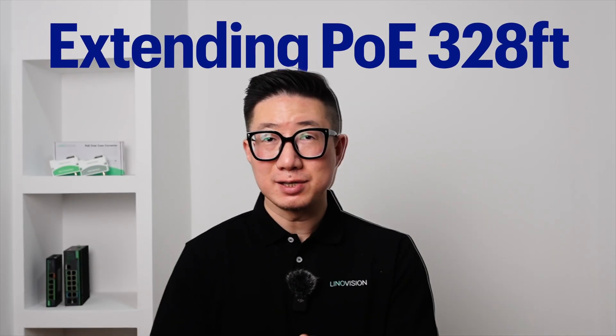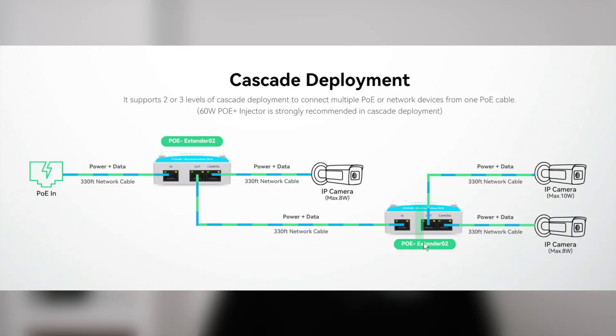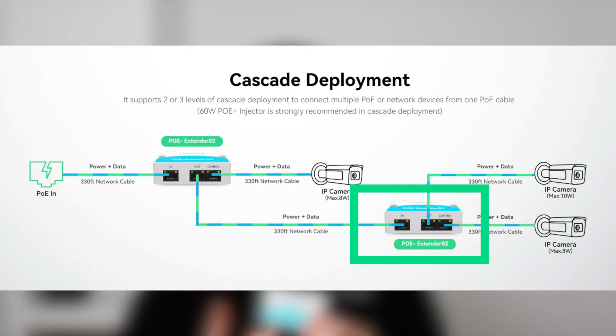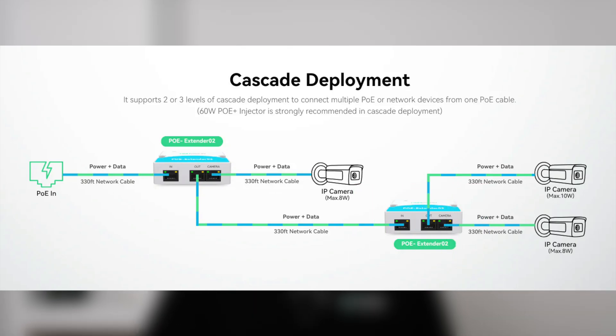This is a POE extender, which means it can extend your power and POE transmission distance. Originally you have 100 meters — you can add another 100, making it 200 meters total. And if you want to extend further, you can get a second unit of this little gear, which means it can support a total of 300 meters of POE transmission distance.